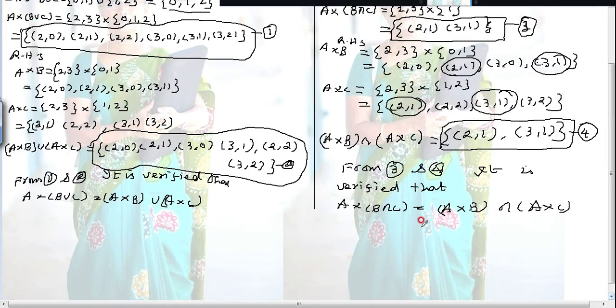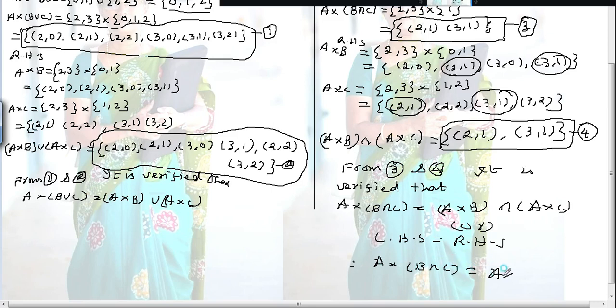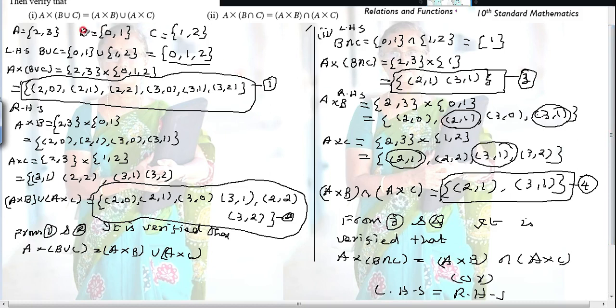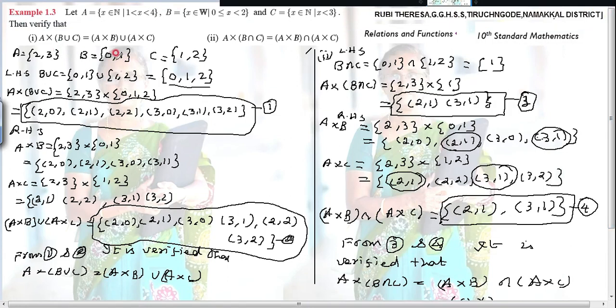Therefore LHS = RHS, so A × (B ∩ C) = (A×B) ∩ (A×C) is verified. If you write the set clearly here, you will get the correct answer. Converting the set builder form into roster form — roster form means the elements are listed within the curly bracket and separated by commas. Recall the concept while doing the problems.